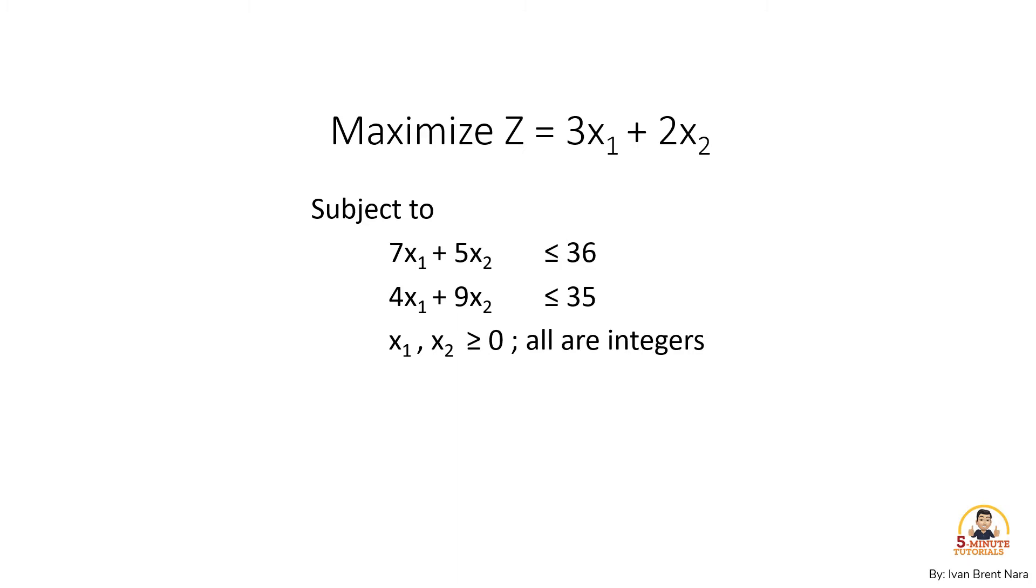Considering this optimization problem, the objective function says maximize z equals 3x sub 1 plus 2x sub 2 where we have two decision variables, x sub 1 and x sub 2. The objective function is subject to three constraints.